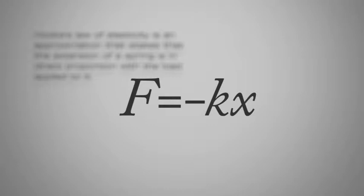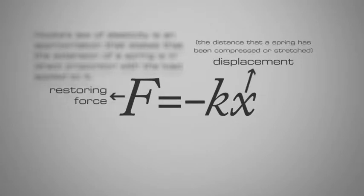F equals negative kx, where x is the displacement of the spring end from its equilibrium position, F is the restoring force exerted by the spring on that end, and k is a constant called the rate or spring constant, measured in newtons per meter.